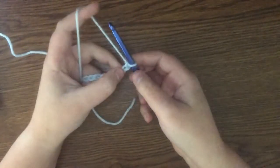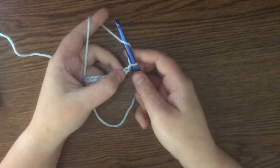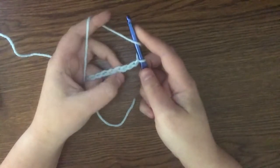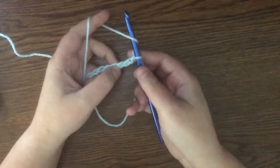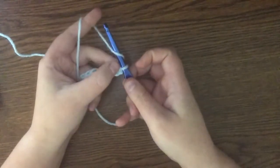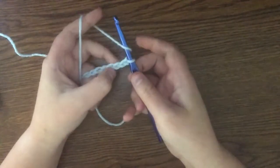So for double crochet, you need to yarn over and insert your hook into the third chain from your hook. So here's one, right here, two, three. You're going to insert into this one.